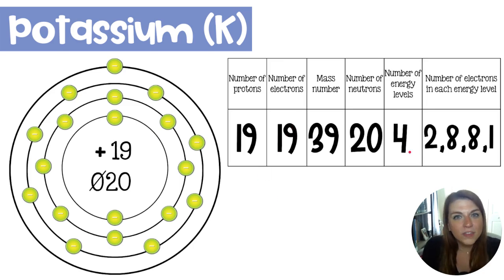Because potassium is in the fourth period of the periodic table, it will have four energy levels of electrons, and those will be organized 2, 8, 8, 1.